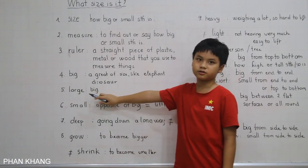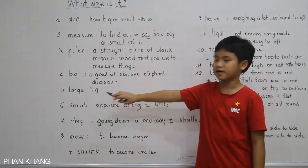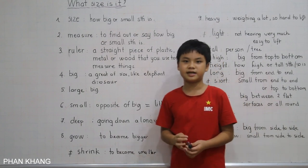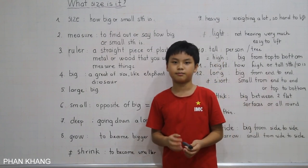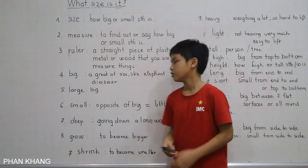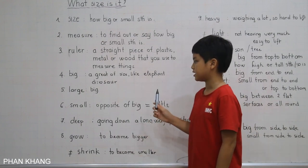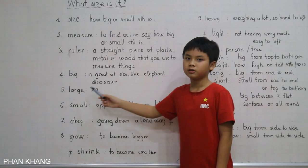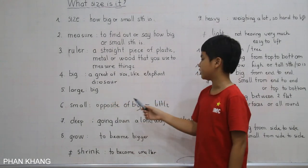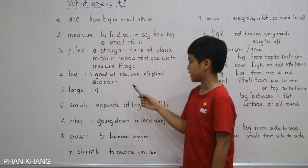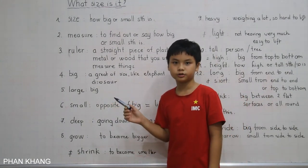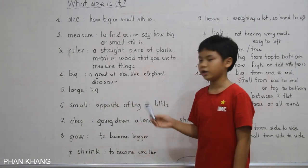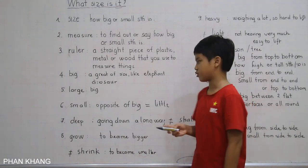Next is large. Large has the same meaning as big. So for every sentence we can make with big, we can replace it with the word large. Also, with other words like huge and enormous. Enormous means very big.